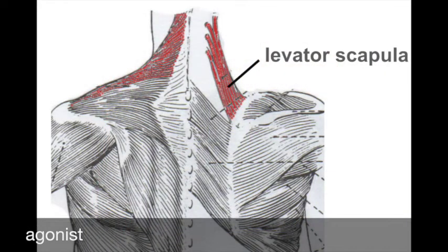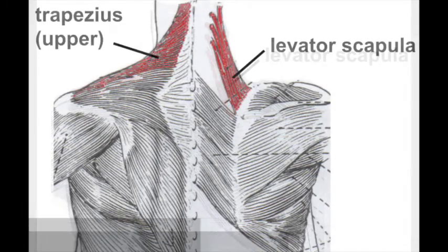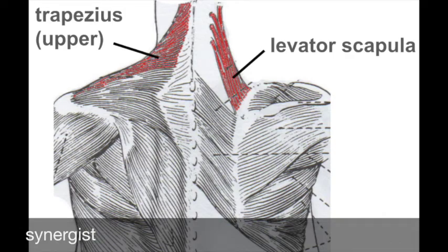The agonist or prime mover of scapular elevation is the levator scapula. It is located on the back of the neck, attaching to the scapula and cervical vertebrae. Synergist or assisting muscle is the trapezius, specifically the upper fibers.